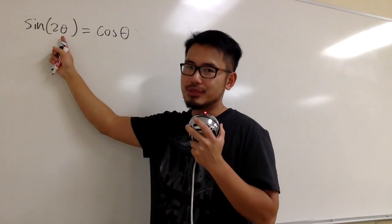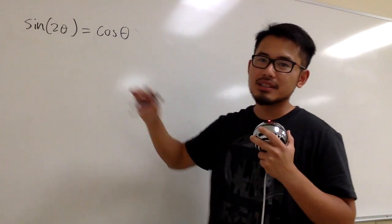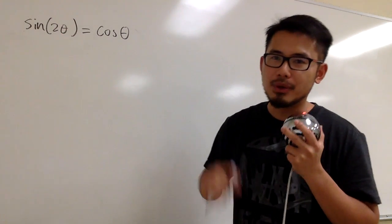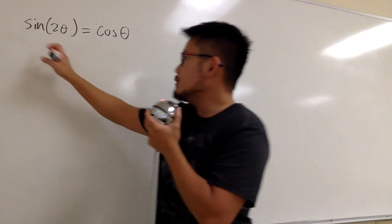Well, we have 2θ here, and this is only θ, so that's no good. But this is 2θ instead of the sine. We do have the double angle formula for sine. So let's use that.